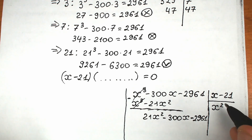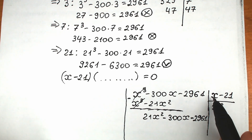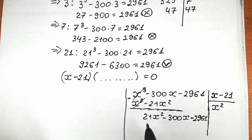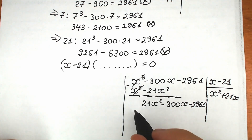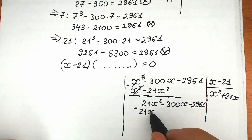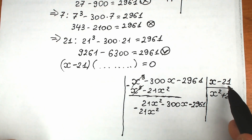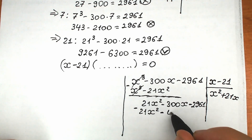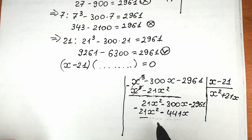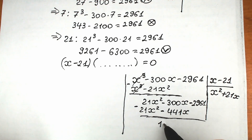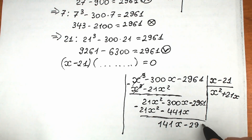Next, we multiply x minus 21 by 21x, giving us 21x squared minus 441x. We subtract this, and as a result we have 141x minus 2,961 remaining.